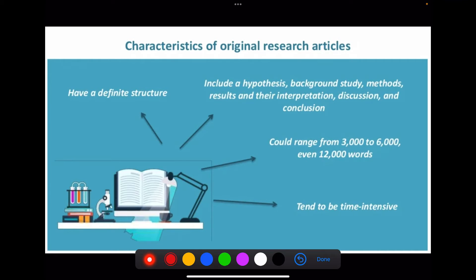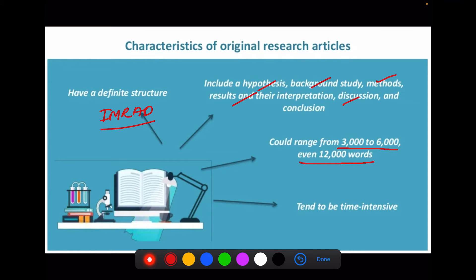The other characteristics of the research article: it has a definitive structure — the IMRAD style — and includes a hypothesis, background study, methods, results and their interpretation, discussion, and conclusion. It ranges from 3,000 to 6,000 words. Sometimes even 12,000 words will be accepted if the increase in word count is justified, or you may have to pay more for including more pages in journals. It tends to be time intensive also.